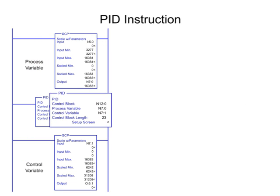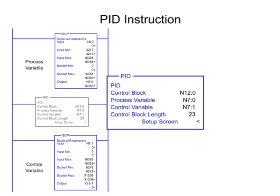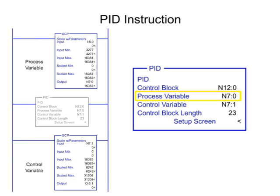In the PID instruction, the process variable parameter is programmed as an integer file, which is the scaled value from the SCP instruction. The control variable parameter is programmed as an integer, which is the memory address for the output value.